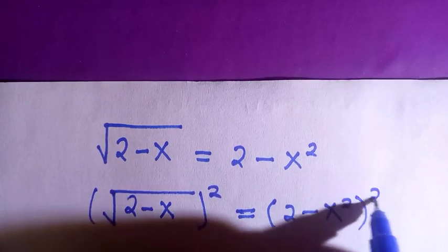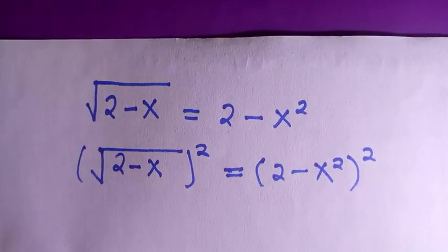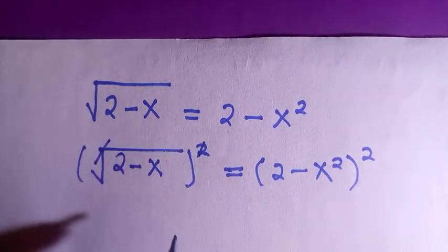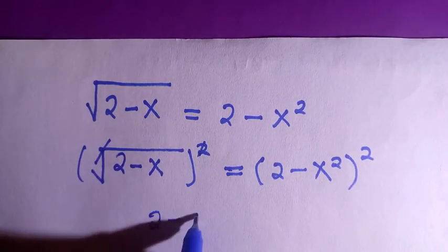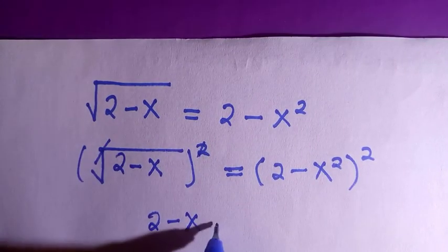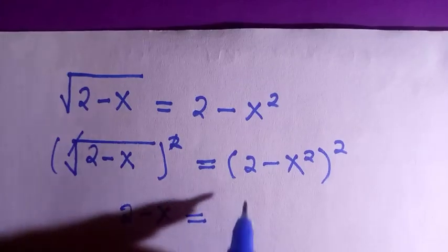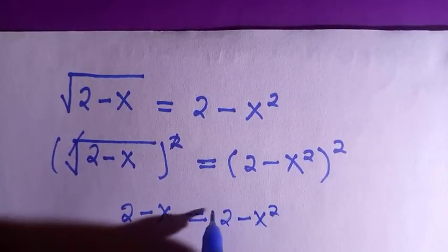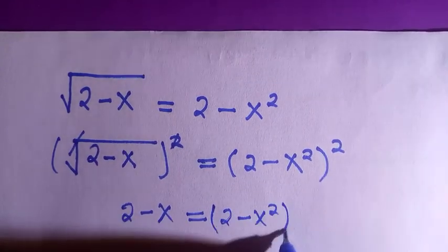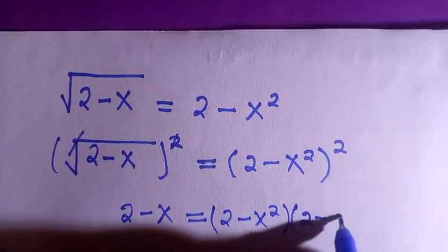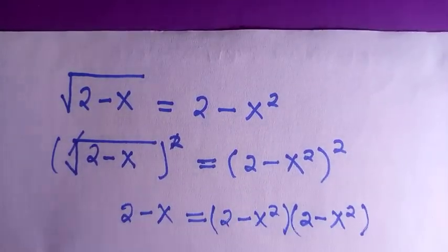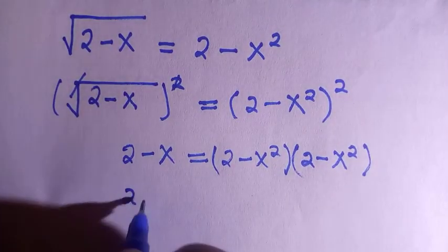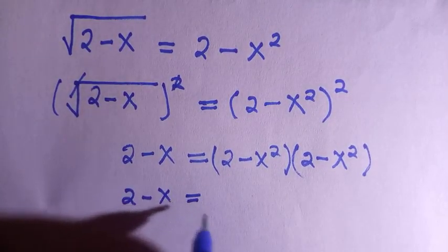That equals bracket 2 minus x raised to power 2, all raised to power 2. The next thing we do is these two cancel each other. After canceling, we have 2 minus x equals — and we try to break this into two parts: we have (2 minus x squared) times (2 minus x squared).